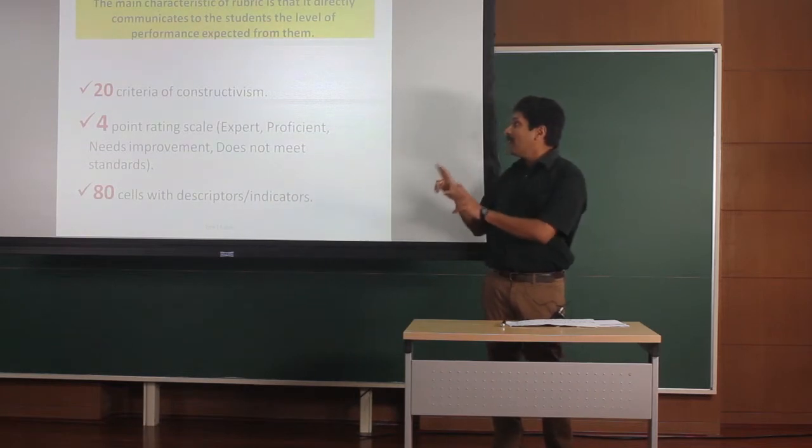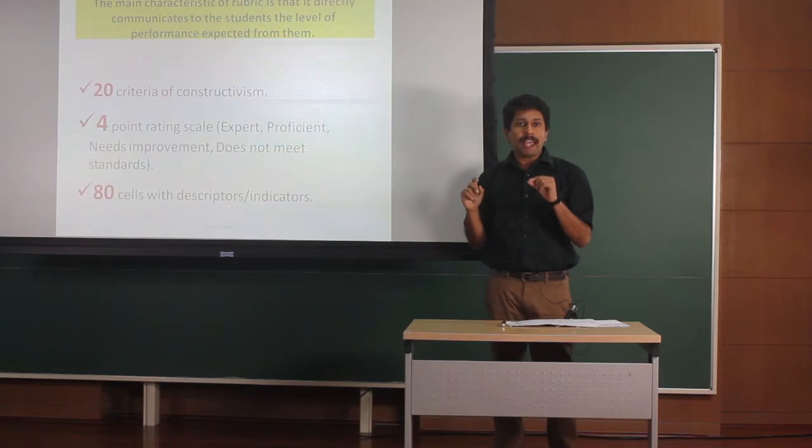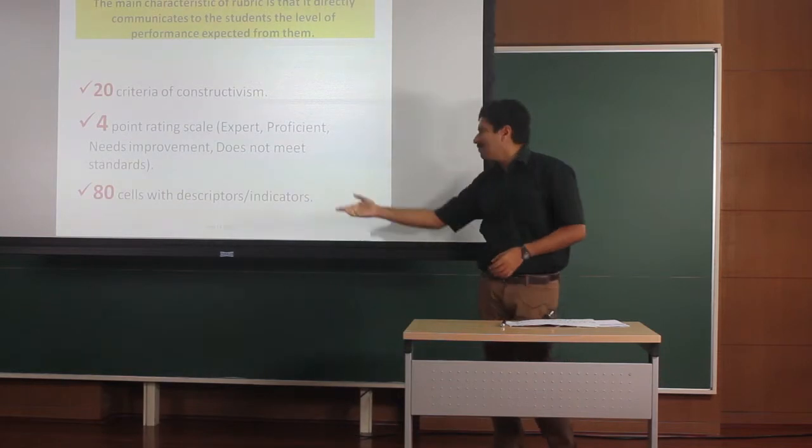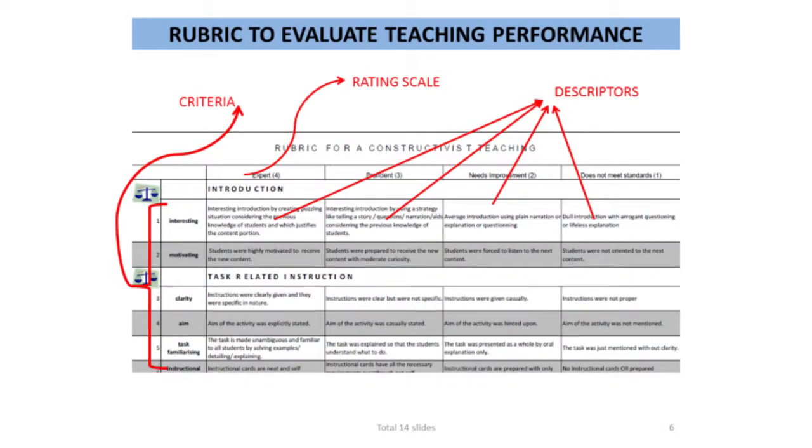So from this big picture, a student will be able to understand where he is now and where he has to come up to. This is the rubric which I have created. There you can see 1, 2, 5 criteria and it continues up to 20. Those criteria I have listed in the left hand side.